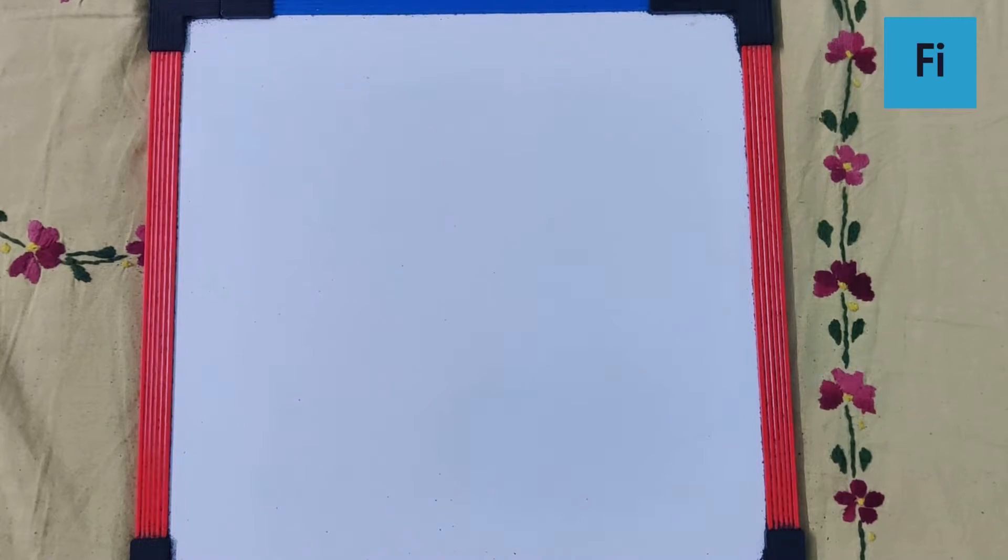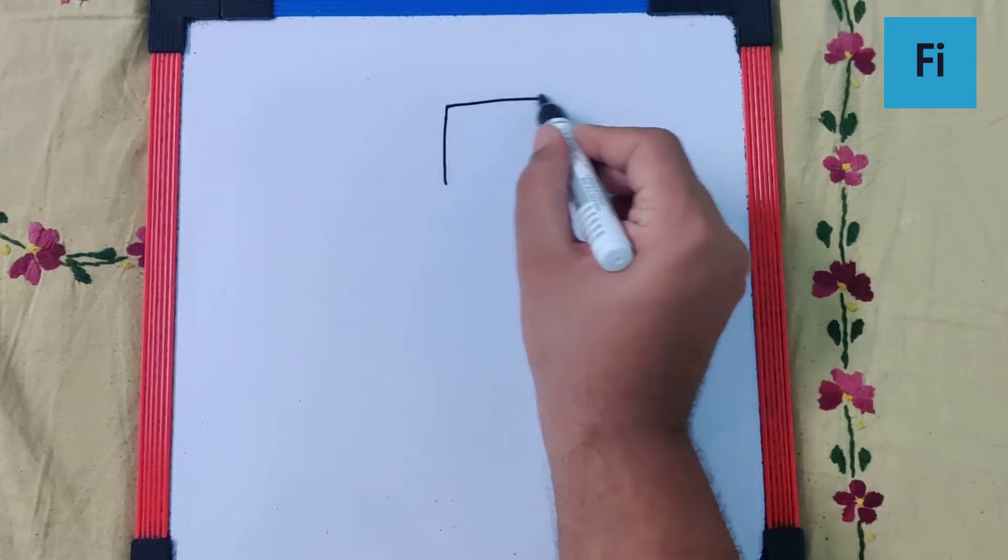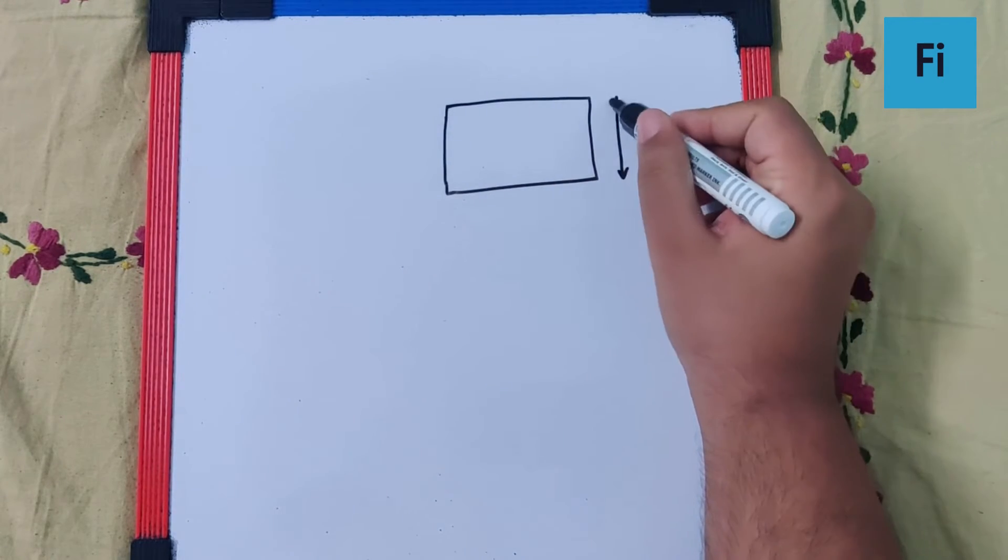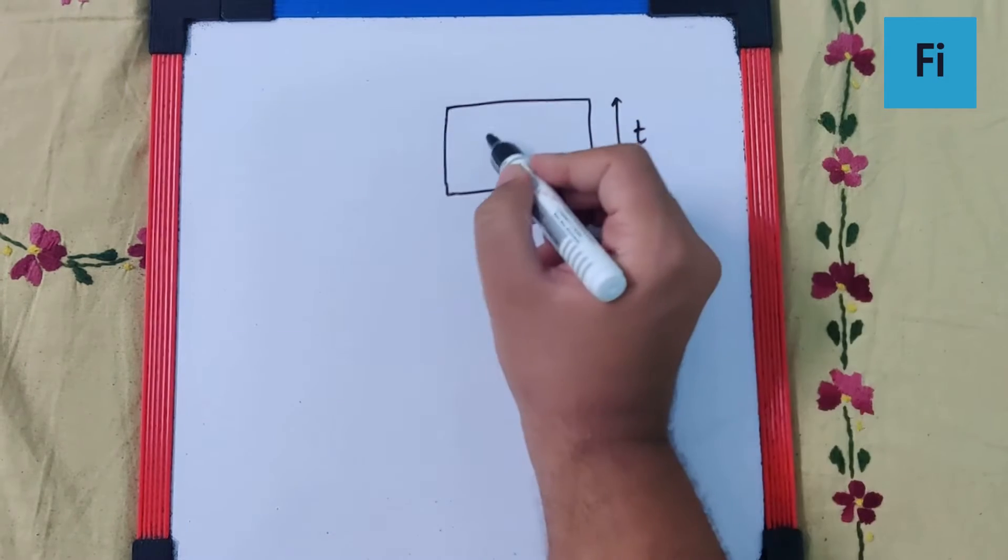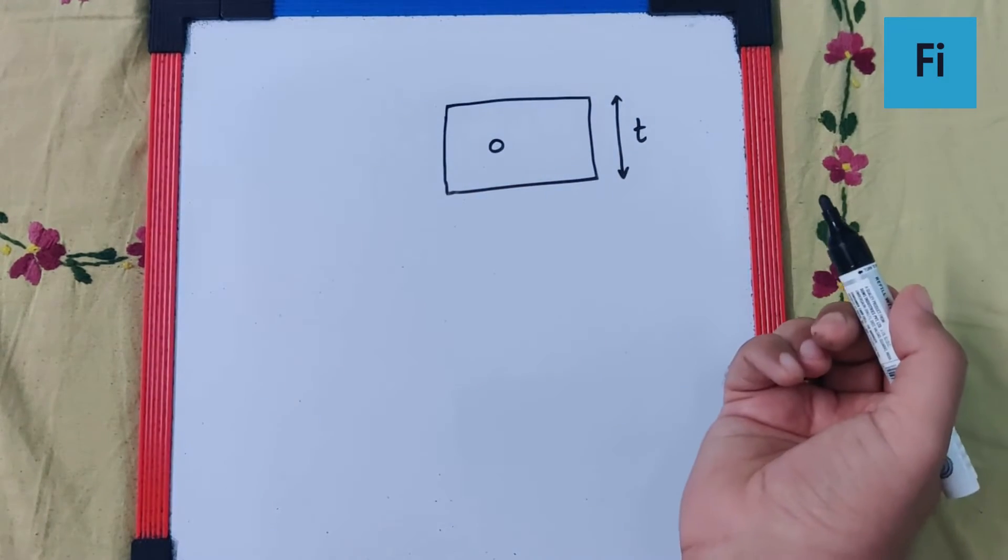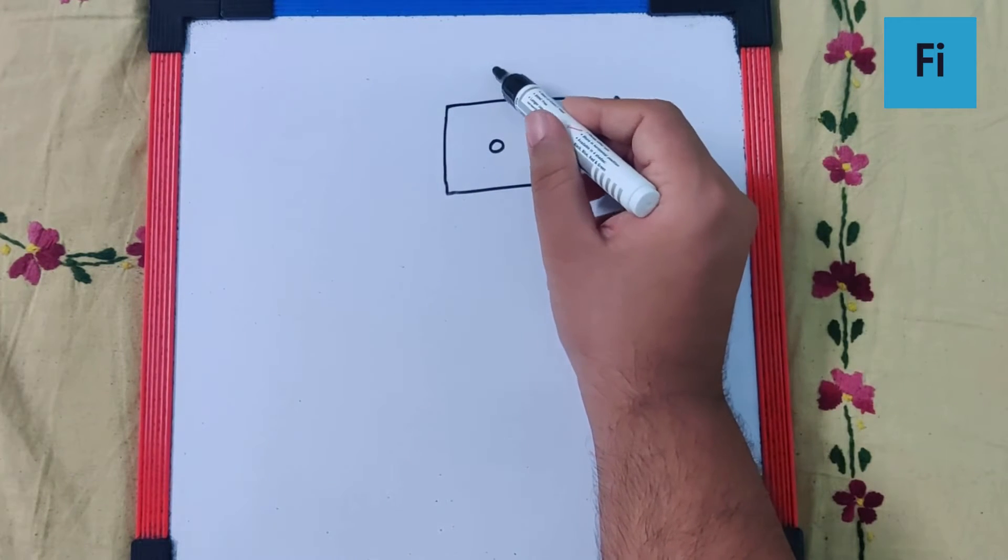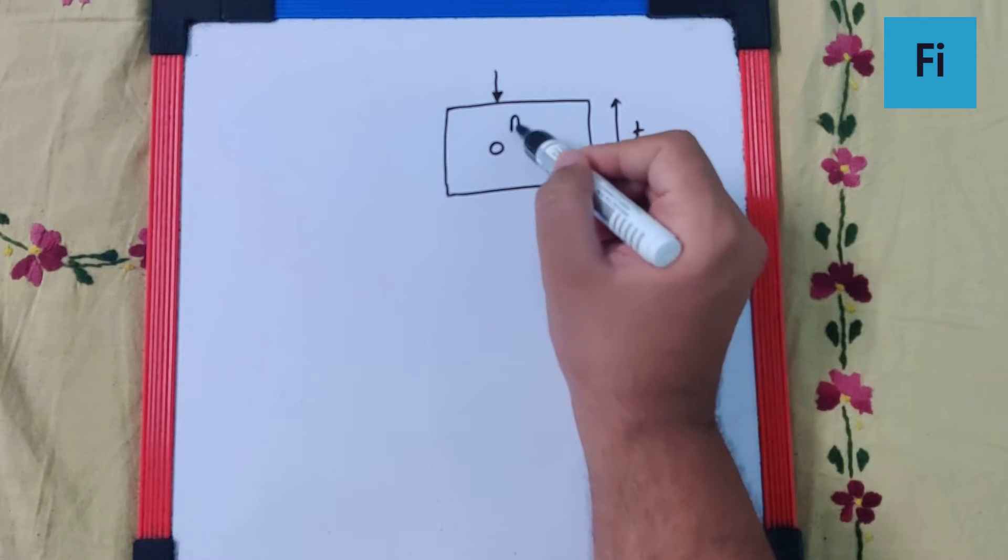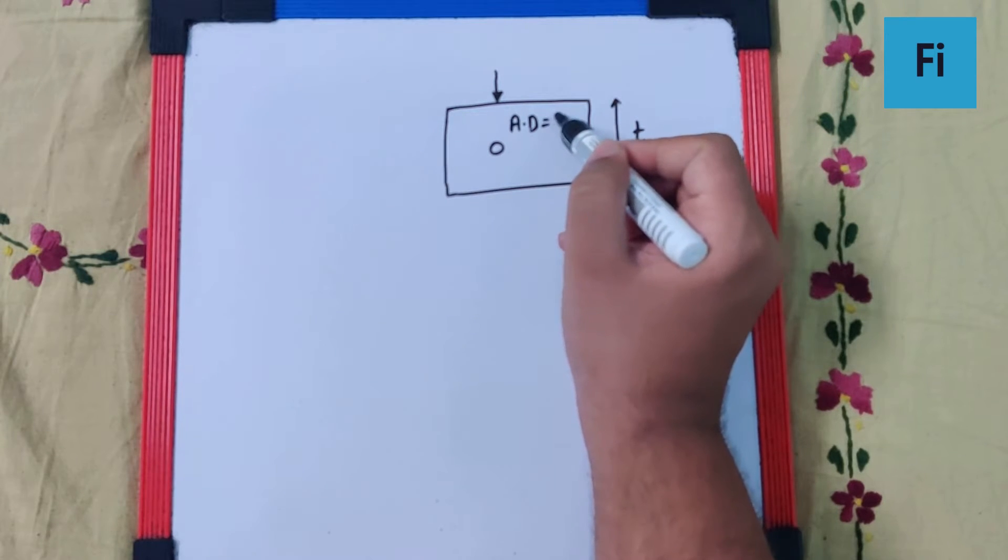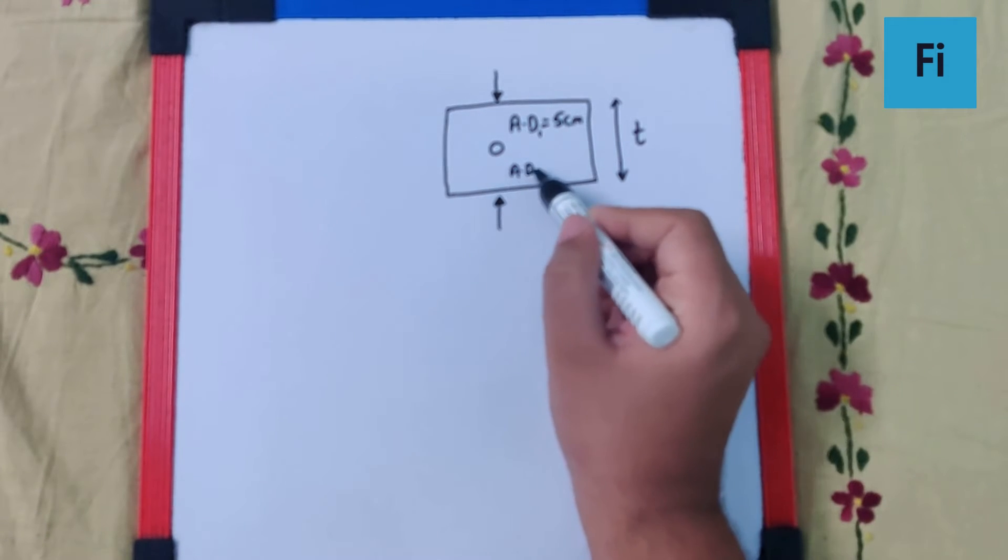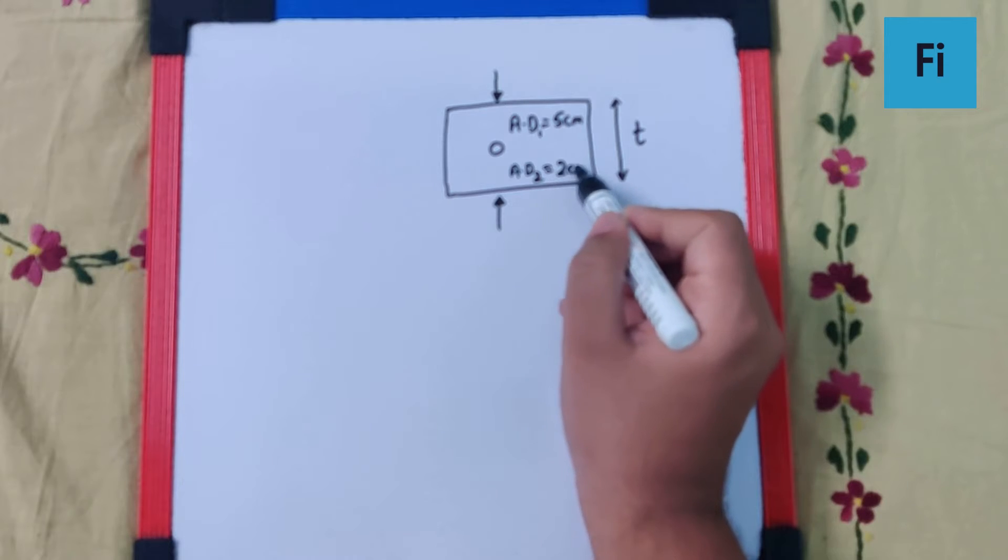Please try and understand. If this is a glass slab, which we can say is T, if we assume that the bubble is here, when we look at this side, the apparent depth is 5 cm. And if we look at it from the other side, the apparent depth is 2 cm.